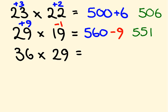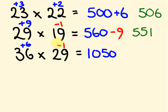For 36 times 29, we use base 30. The 36 is 6 more than 30, and 29 is 1 less. Cross addition: 36 take 1 is 35. Multiply by 3: 35 times 3 is 105, so 1,050. Then minus 1 times 6 is minus 6. So 1,050 minus 6 gives 1,044.